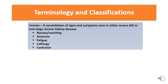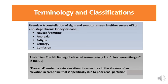We have other important terms. Uremia is a constellation of signs and symptoms seen in either severe AKI or end-stage chronic kidney disease, represented by nausea, vomiting, anorexia, fatigue, lethargy, and confusion — all due to irritation of mucous membranes and endothelium by uremic toxins. Azotemia is the lab finding of elevated serum urea. Pre-renal azotemia is an elevation of serum urea in the absence of an elevation in serum creatinine, specifically due to poor renal perfusion.